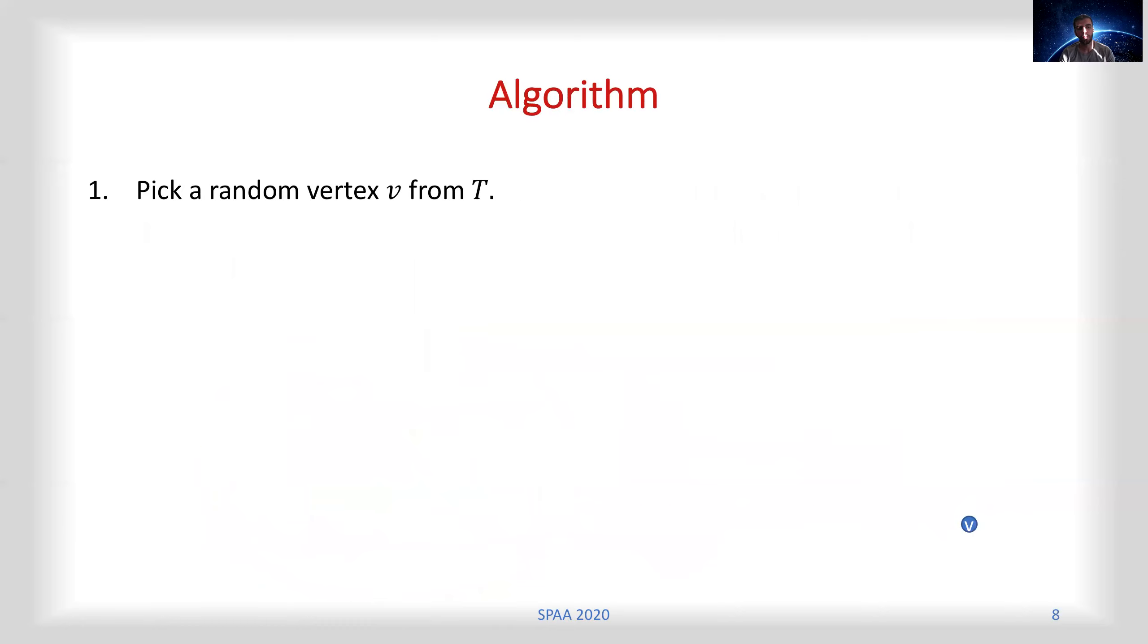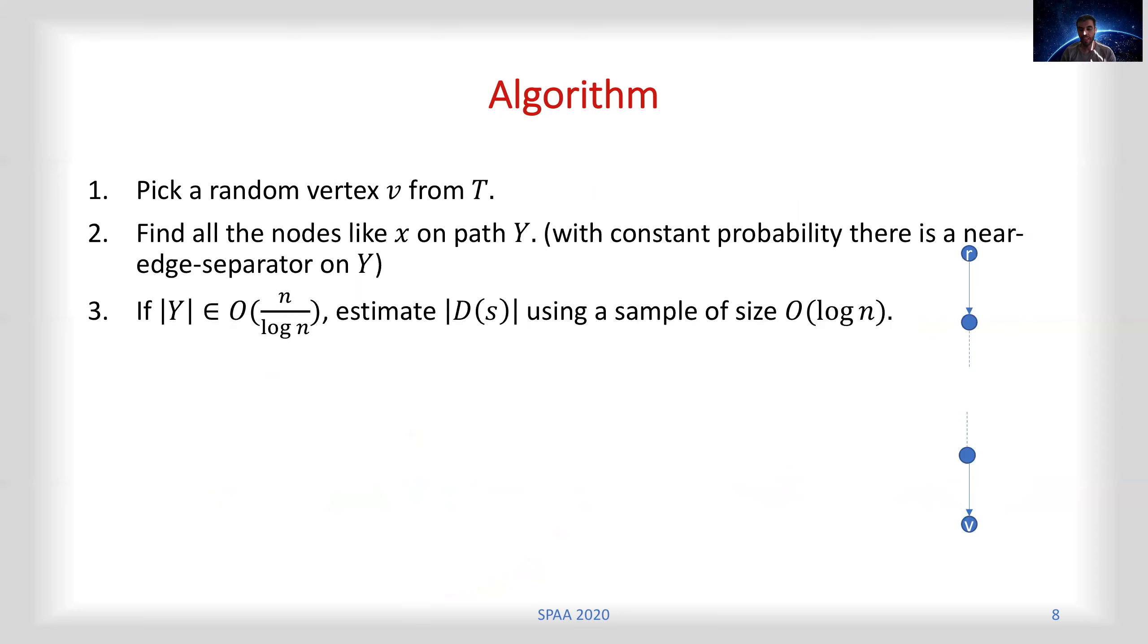The algorithm in this simple form is like this: we pick a vertex v from T, we find all of the nodes on the path from root to that vertex v. With constant probability there is a near-edge separator on that path. If the path is small enough, then we estimate the number of descendants for each of the nodes on the path using a sample size of O(log n). Otherwise, see the paper to see how to shorten the path.